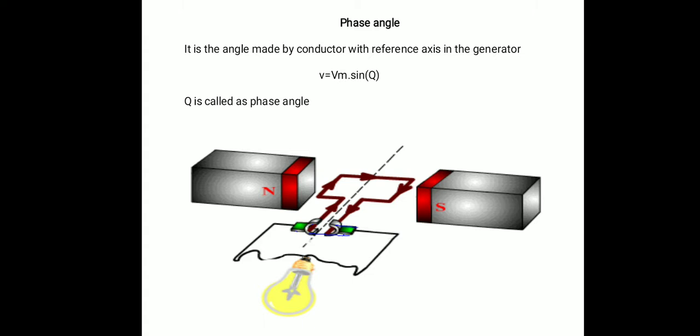Next is the phase angle. It is the angle made by a conductor with the reference axis in the generator. In the simplest form of a generator, there is a reference axis drawn between two poles — north pole and south pole. The north pole emits magnetic flux which terminates at the south pole, and in between that magnetic flux there is a single turn coil, which is the most simplest form of generator.